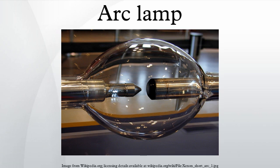An arc is the discharge that occurs when a gas is ionized. A high voltage is pulsed across the lamp to ignite or strike the arc, after which the discharge can be maintained at a lower voltage. The strike requires an electrical circuit with an igniter and a ballast.